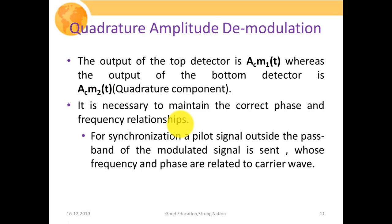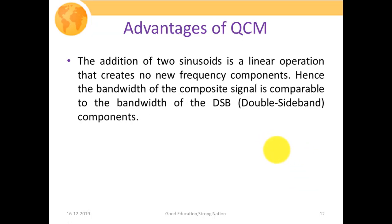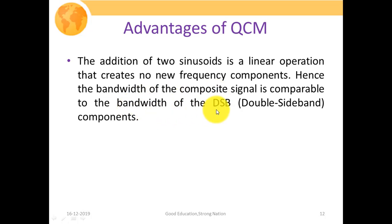It is essential to maintain the correct phase and frequency relationship; otherwise we will have distortions while receiving the signals. For synchronization, a pilot signal outside the pass band of the modulated signal is sent, whose frequency and phase are related to the carrier wave, to avoid distortion. The major advantage of QCM is that the addition of two sinusoids is a linear operation, creating no new frequency components; hence the bandwidth of the composite signal is comparable to the bandwidth of the double sideband components. We can therefore pass two different signals within the bandwidth of a single double sideband signal.